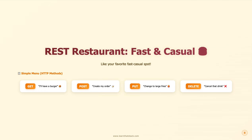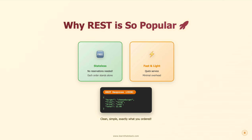And the best part? You can come as you are — no reservation needed. Each order stands completely on its own; the restaurant doesn't need to know who you are or what you ordered last time. So why does everyone love REST? Two big reasons. First, it's stateless — every single request contains everything the server needs to know. It's like walking into McDonald's; they don't need to know your life story to serve you a burger. Second, look at that response: clean, simple JSON. Just curly brackets and data. Here's your burger, here's your fries, that'll be $12.99 — no extra fluff, no unnecessary wrapping. This simplicity is why REST powers 90% of modern web APIs. When in doubt, REST is probably your answer.